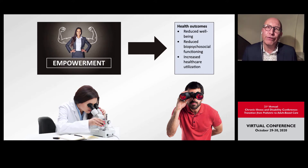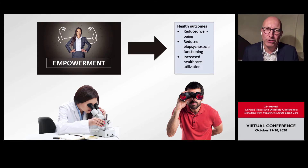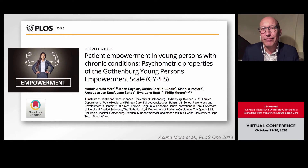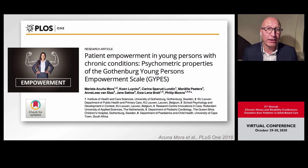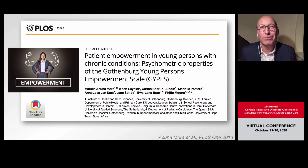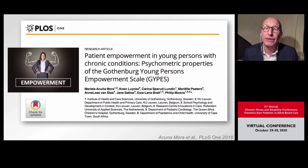We strongly believe that if we can empower our patients, we can indirectly work on those more distal outcomes. To measure empowerment, we developed the Gothenburg Young Persons Empowerment Scale — a generic scale used in congenital heart disease and diabetes patients, and now being used by other researchers in other conditions. It is a questionnaire of 15 items that takes only a few minutes to complete, making it very suitable for use in clinical settings.